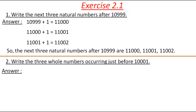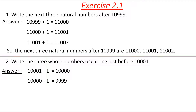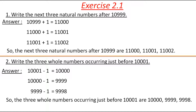Now here is the second question in Exercise 2.1: Write the three whole numbers occurring just before 10,001. As we added 1 to find the next number, we have to subtract 1 to find the before number. So, 10,001 − 1 = 10,000; then 10,000 − 1 = 9,999; and again subtracting 1 gives 9,998. Therefore, the three whole numbers occurring just before 10,001 are 10,000, 9,999, and 9,998.